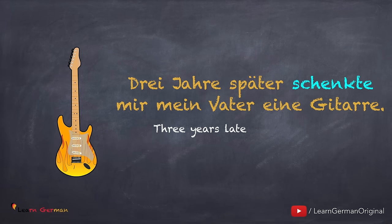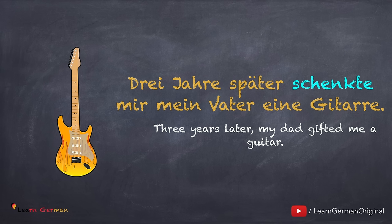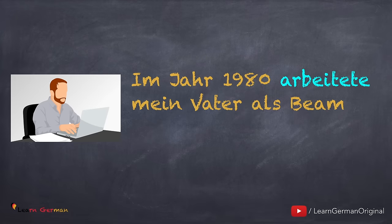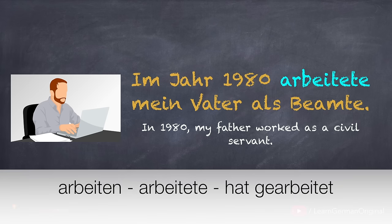Drei Jahre später schenkte mir mein Vater eine Gitarre. Schenken, schenkte, hat geschenkt. Es ist nicht falsch, wenn man diese Sätze mit Partizip Perfekt formuliert. Aber wir haben hier eine Art Bericht, deshalb benutzen wir Präteritum. Im Jahr 1980 arbeitete mein Vater als Beamter. Arbeiten, arbeitete, hat gearbeitet.